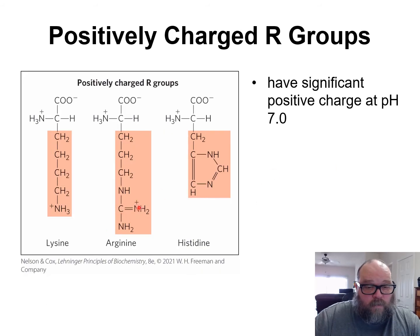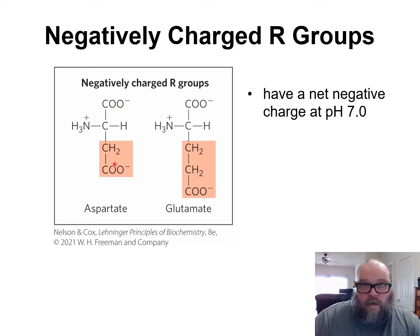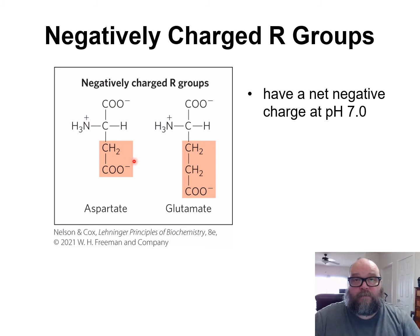The positive charge groups show N-plus. The negative charge shows COO-negative, and this is in the R group — not the carboxyl group that's part of the base amino acid. That base carboxyl and amino group are part of the polypeptide chain. This R group is going to be sticking off the chain, able to interact — there's a negative, and on the previous group there was a positive.